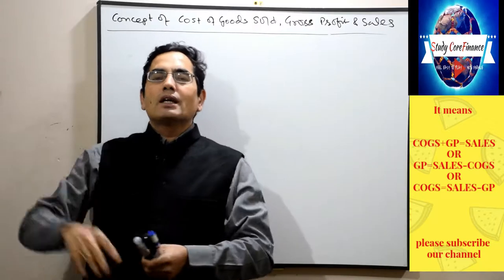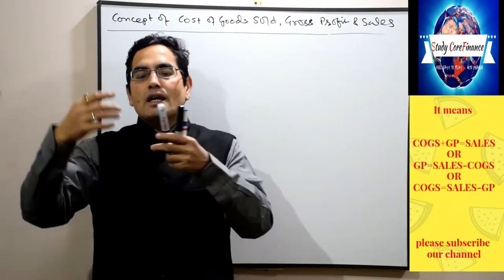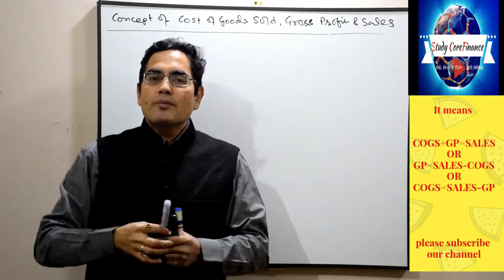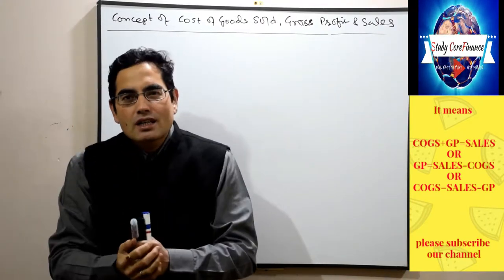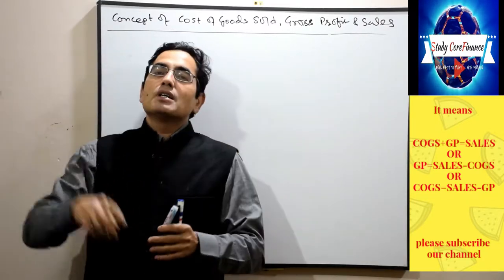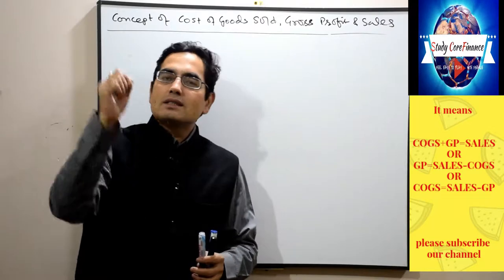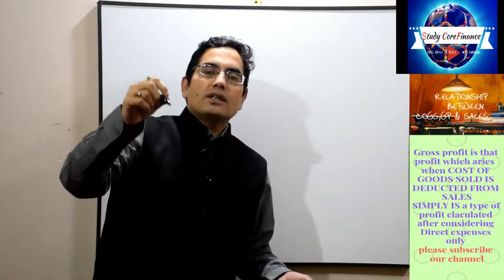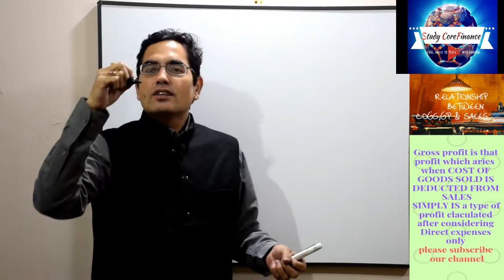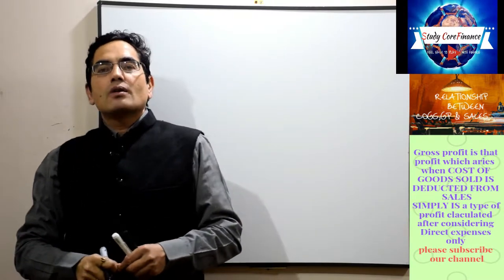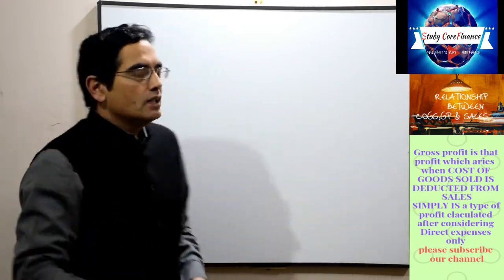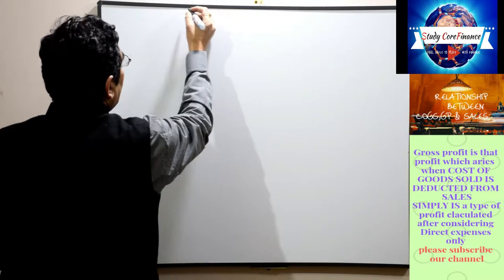Don't get confused by formulas — there is no formula here. This is a relationship (sambandh). The relationship tells us: this much cost was spent in making the goods, we add our profit margin, and after that we sell at that price. So this relationship is called cost of goods sold, gross profit, and sales. Any business entity makes a trading account to calculate its gross profit.